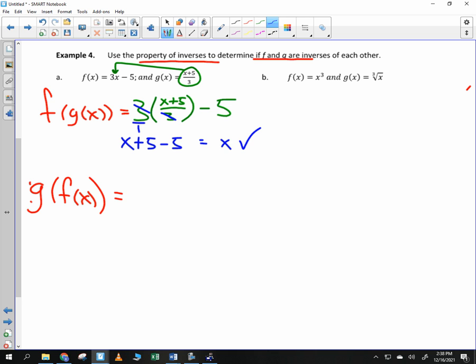But you do need to compose it both ways. So g(f(x)), which one do I start with now? I'll start with F, and I plug it in right here. I thought I heard a sound. Okay. So I get 3x - 5. I plug it in for the x. What do I have after that? Plus the 5, all divided by 3.